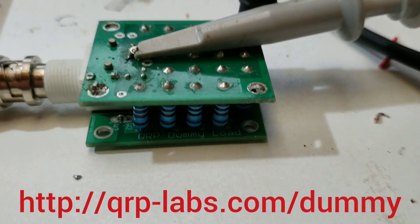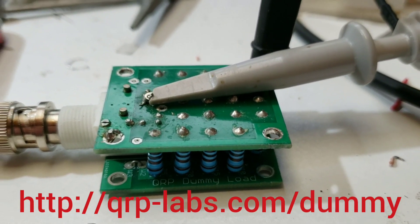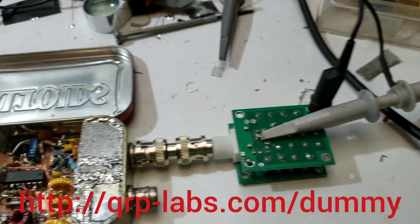And what you see here is a QRP Labs dummy load. That's the 50 ohm load with the oscilloscope probe across it.